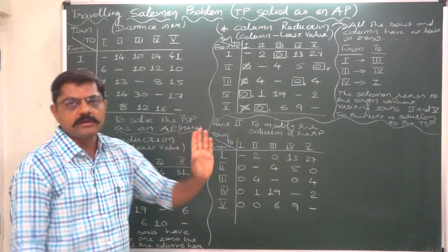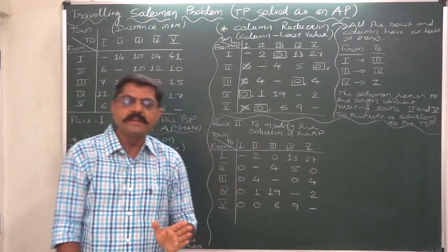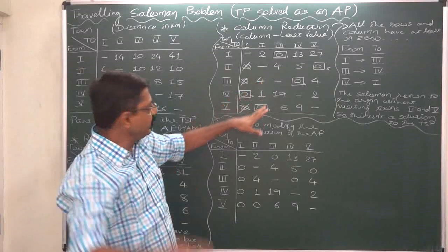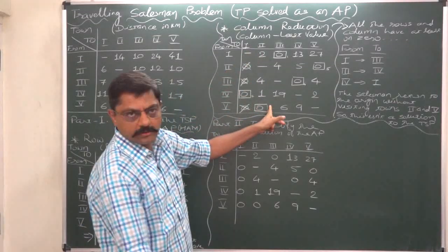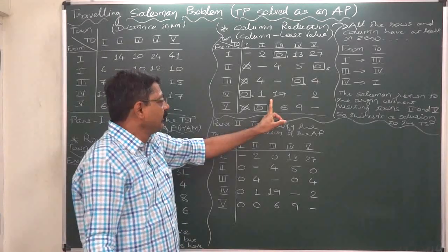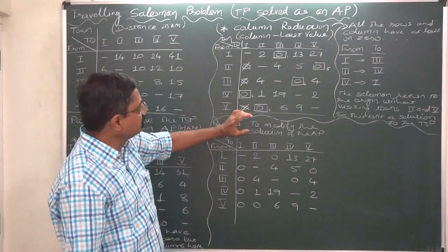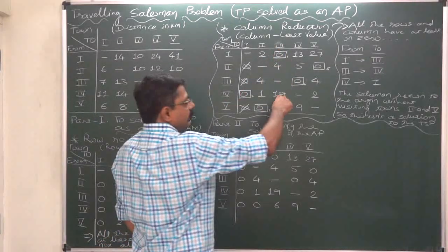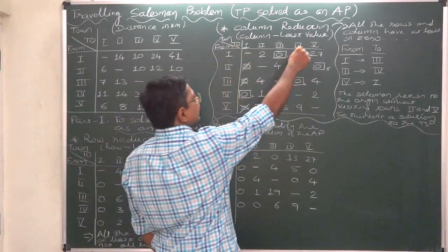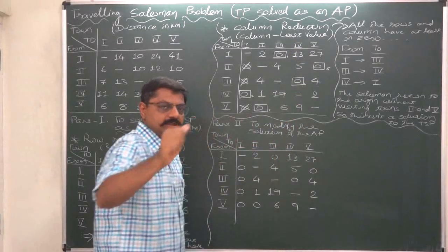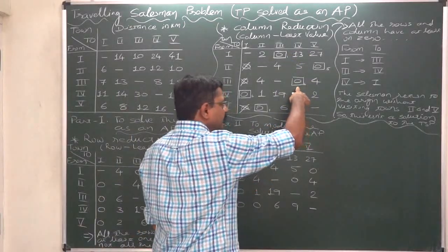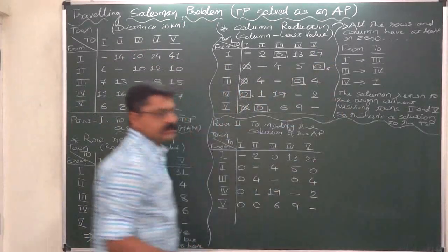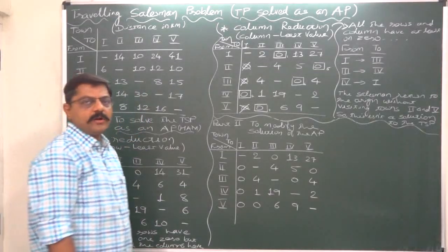Now go for selecting a column with only one zero originally. Since in the first column we already made an assignment, the second column has one zero and is eligible for assignment — we assign there and cancel. This column has also only one zero originally, so assignment here and the zero in the same row was previously cancelled. This column is also with only one zero originally, so it is also eligible for assignment.